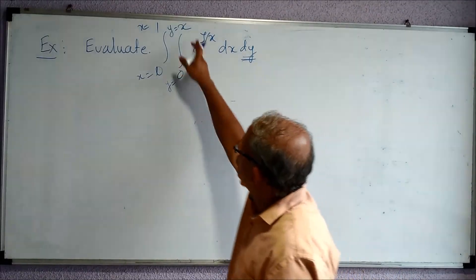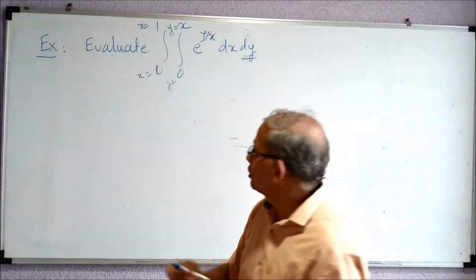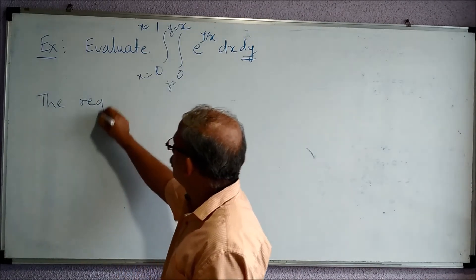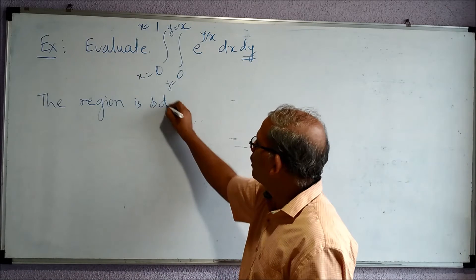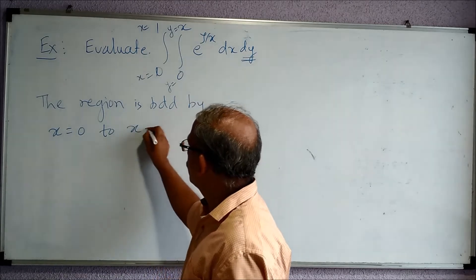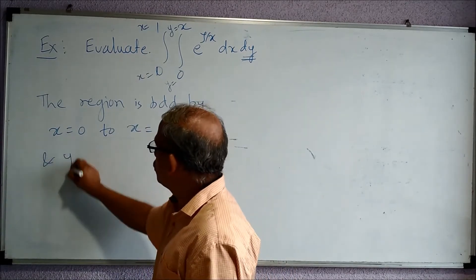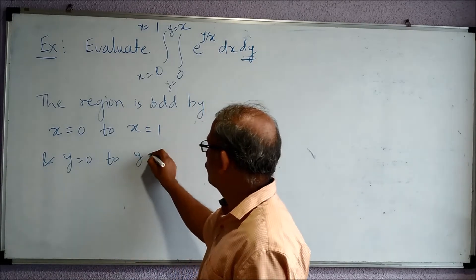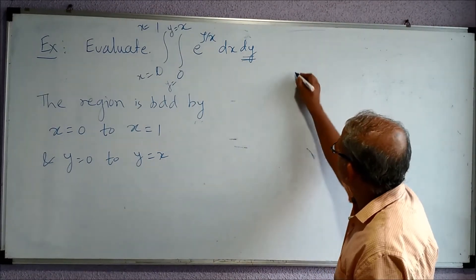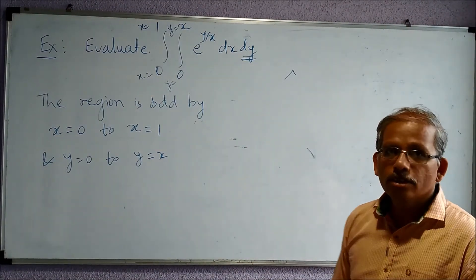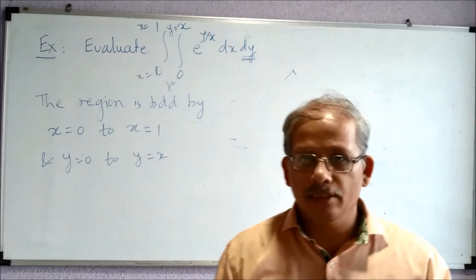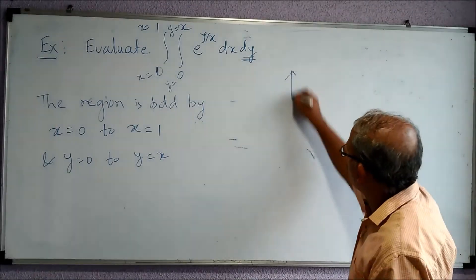This gives me a rough idea or picture of the region. The region is bounded by x equal to 0 to x equal to 1 and y equal to 0 to y equal to x. Let us try to draw this. This is a three-dimensional problem, but the region is always in the x-y plane, so it is two-dimensional. We will draw this region here as a two-dimensional curve.